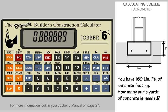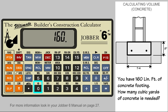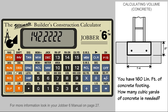Now we multiply this by the total length. Since we are now in decimal feet, we can just enter 160. This gives us the total cubic feet of our concrete footing. To convert it to cubic yards, we press the Invert key and the Cubic Yard key.